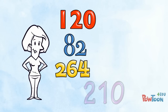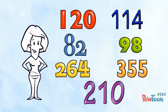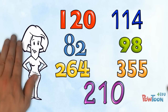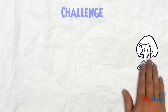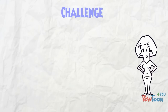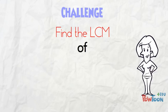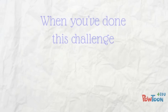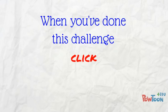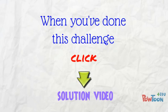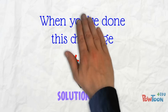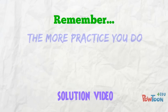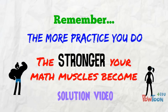You can see that when you are given even bigger numbers, using the prime factorization method is going to be very helpful. Now here's a challenge for you: using the method I just showed you, find the LCM of 15, 32, and 66. You can do it! When you've done this for yourself, click the link here to check my solution video and see if we got the same answer. Remember, the more practice you do, the stronger your math muscles become!